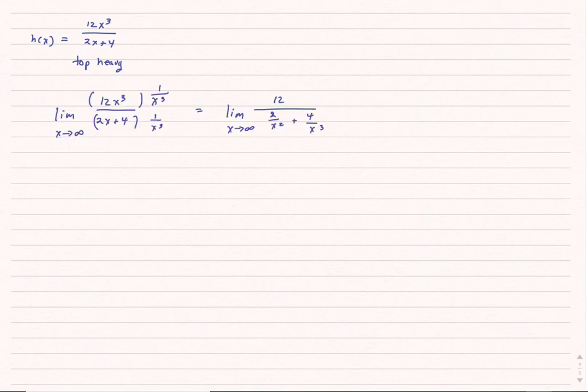For the top heavy case, top heavy is when you can end up with slant and oblique asymptotes — I won't be asking questions about that on exams or homework. But for end behavior: using the same trick and multiplying by 1 over x cubed, I get 12 over 2x squared plus 4 over x cubed. As x approaches infinity, the denominator goes to 0, giving 12 divided by 0. This is not an indeterminate form — a finite number divided by 0 means the result is infinite, specifically towards positive infinity.